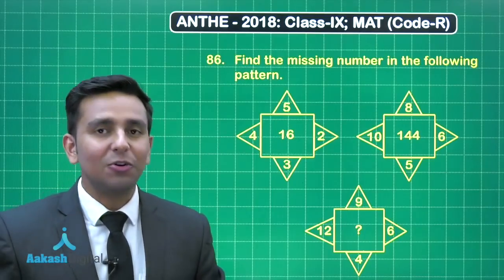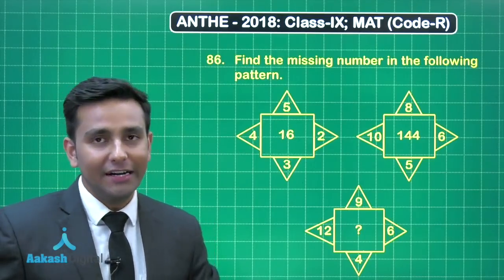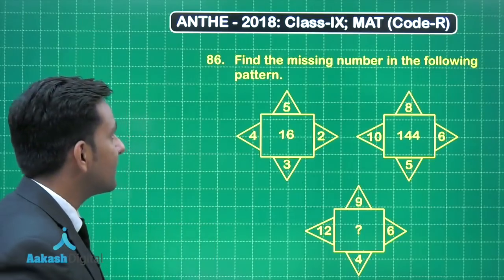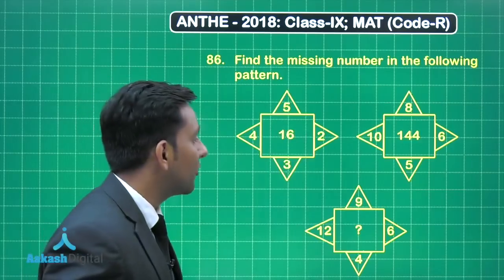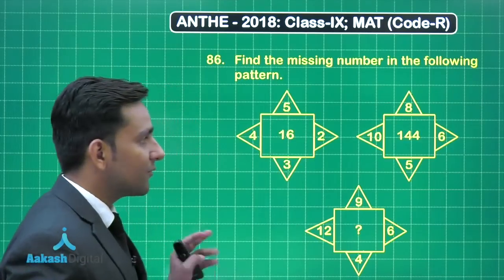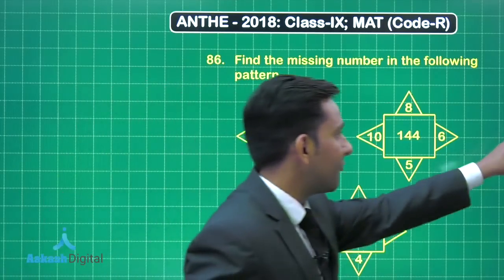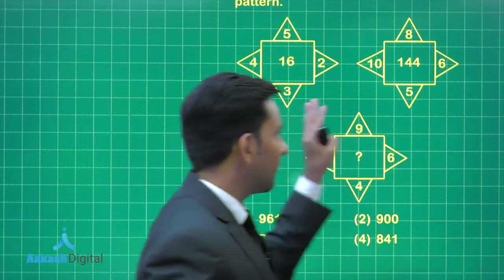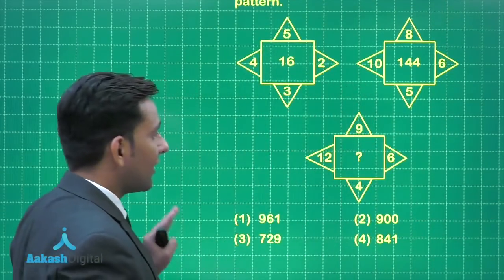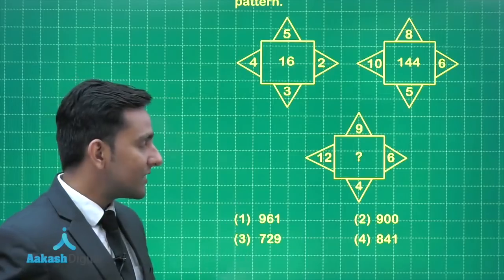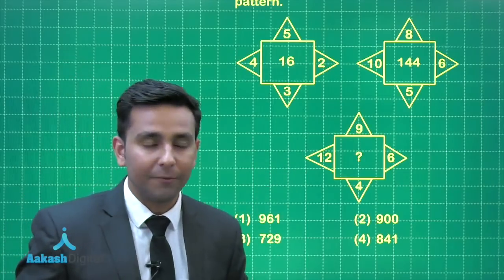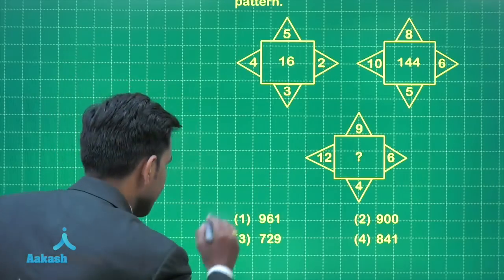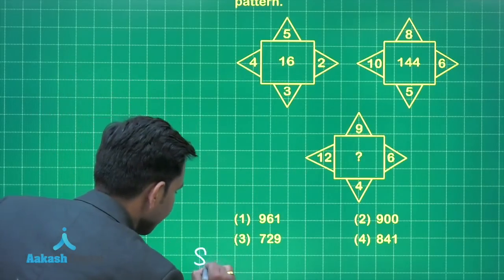Now friends, let's solve question number 86. This question states: find the missing number in the following pattern. So first we have to identify the pattern in the given sequence, then we can find which number will replace this question mark. Come to the solution.